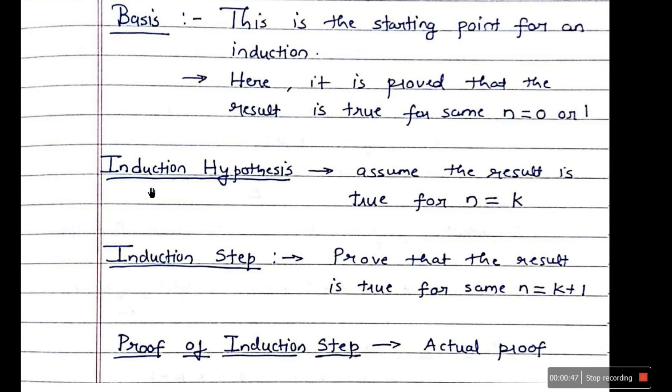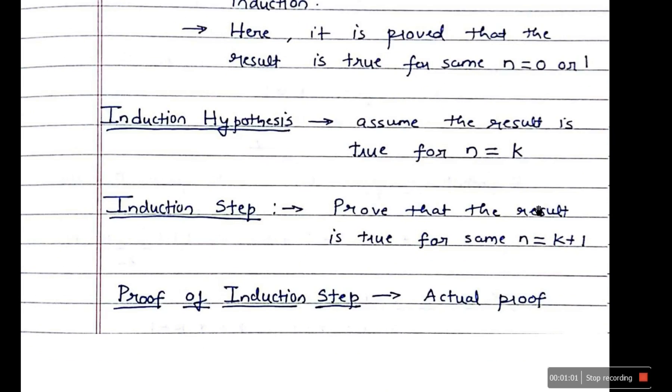Now second step is called induction hypothesis. So here we assume that the result is true for n equal to k. So first we prove that it is true for n equal to zero or n equal to one, and then we assume that it is true for n equal to k. Next thing is we prove that the result is true for n equal to k plus one.